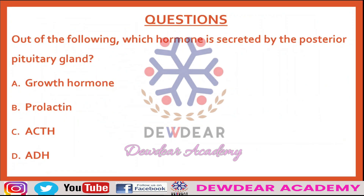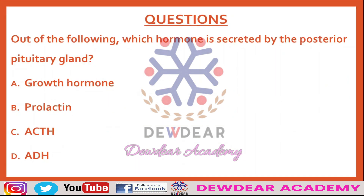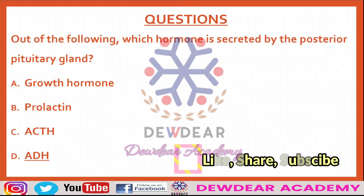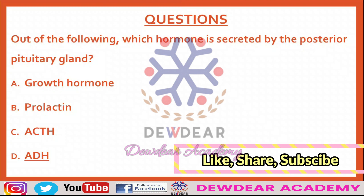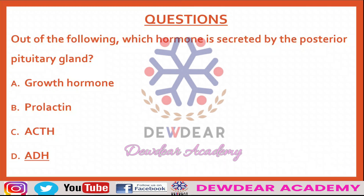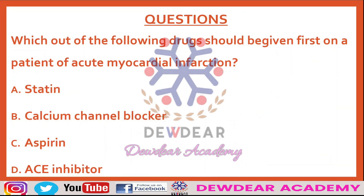The first question: which hormone is secreted by the posterior pituitary gland? Options are growth hormone, prolactin, ACTH, ADH. The correct answer is ADH. The posterior lobe produces two hormones: vasopressin (ADH) and oxytocin. Growth hormone, prolactin, and ACTH are all produced by the anterior pituitary gland.